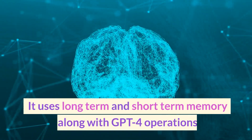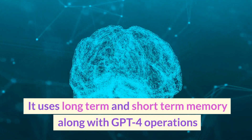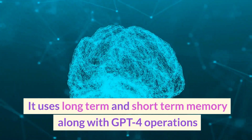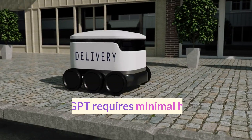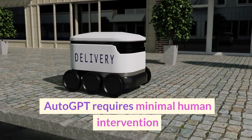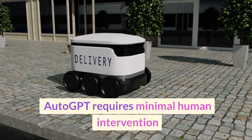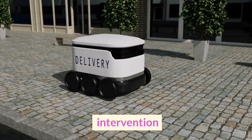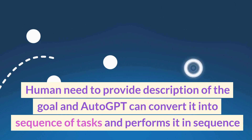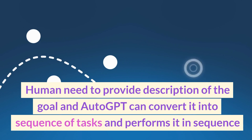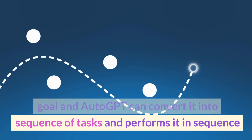It uses long-term and short-term memory along with GPT-4 operations. Auto-GPT requires minimal human intervention — humans need to provide a description of the goal, and Auto-GPT can convert it into a sequence of tasks and perform them in sequence.